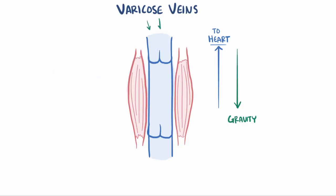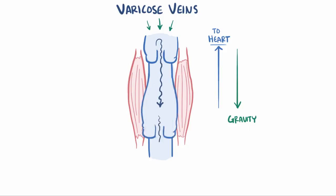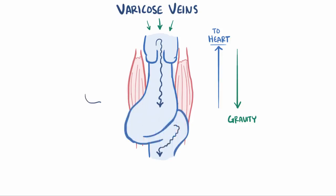For some people, the downward gravitational pull on blood causes the walls of the leg veins to stretch apart over time, which tends to also pull apart those valves. If these valves fail to close properly, they can allow blood to leak backward and pool in the veins, which can lead to more valves stretching out and failing. The veins have now become varicose veins, and from this additional blood they start becoming tortuous, or twisted.